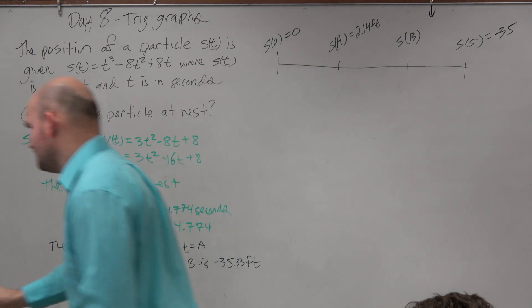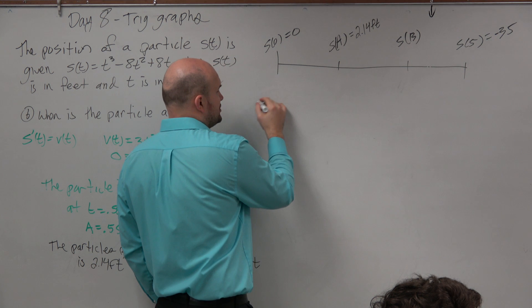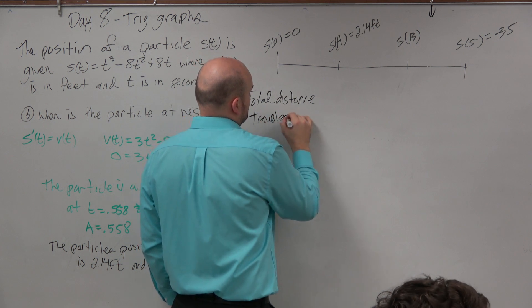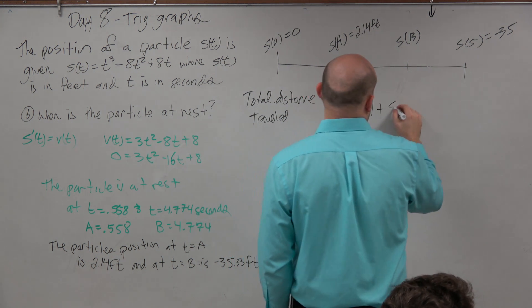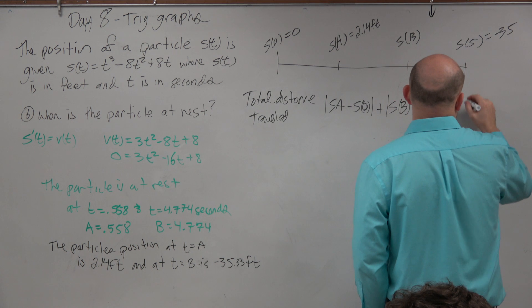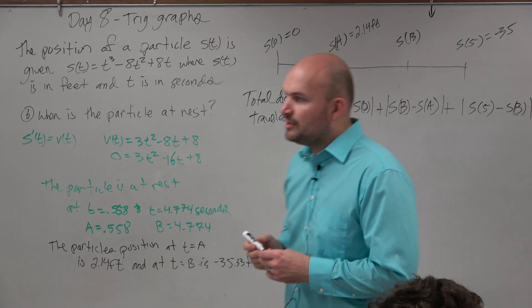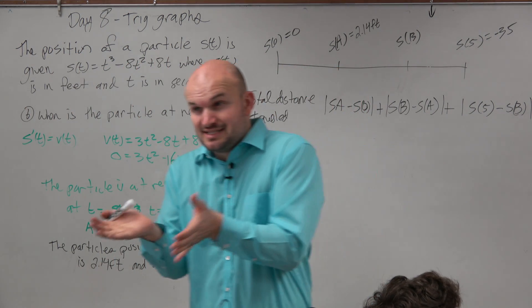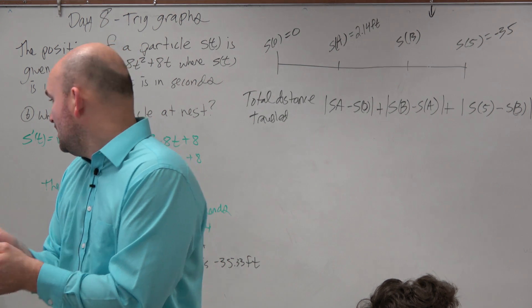So basically, what we're looking into doing is the total distance traveled is going to be s of a minus s of 0 plus the absolute value of s of b minus s of a plus the absolute value of s of 5 minus s of b. Everybody should at least get to that expression so that you can at least understand. Because then, as long as you guys get to at least that expression, then the only mistake that you're going to be making is going to be some kind of arithmetic mistake.